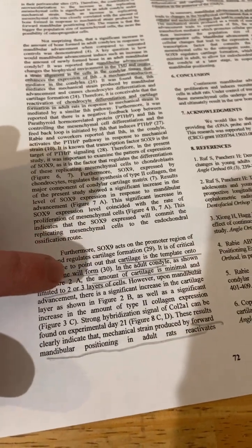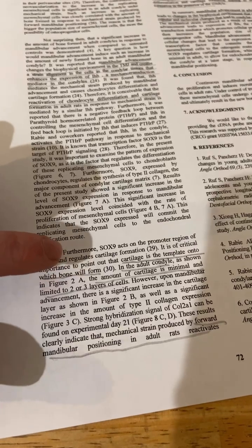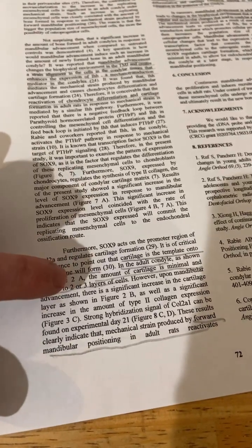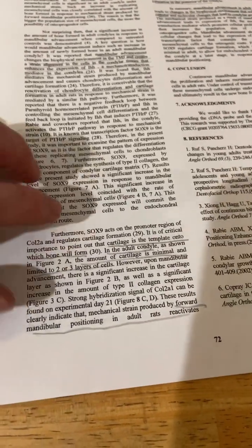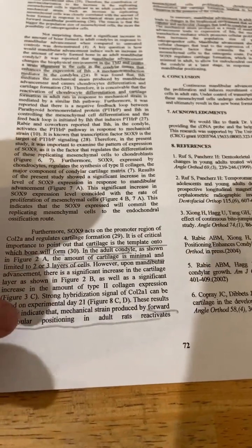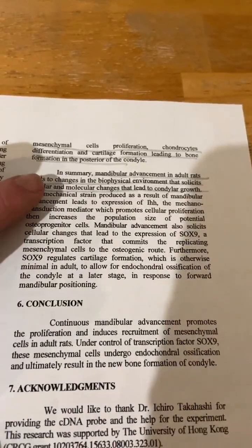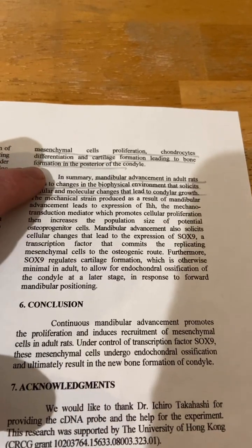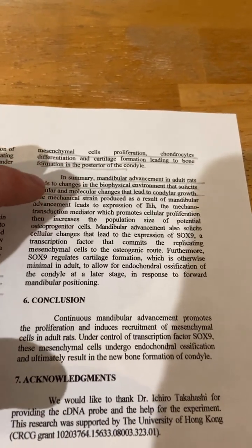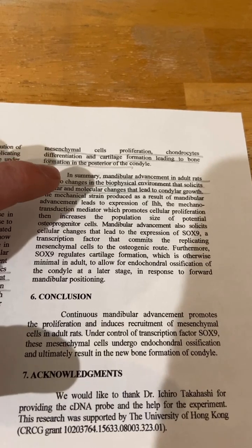In the adult condyle, the amount of cartilage is minimal and limited to two or three layers of cells. Forward mandibular positioning in adult rats reactivates mesenchymal cells proliferation, chondrocyte differentiation, and chondrocyte formation leading to bone formation in the posterior of the condyle.